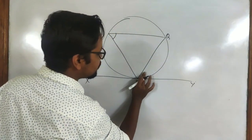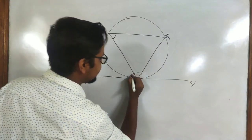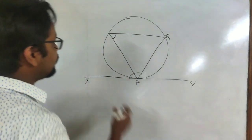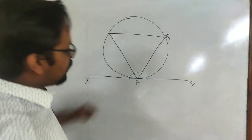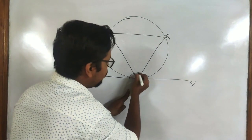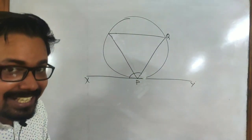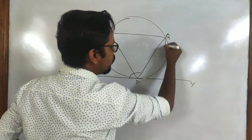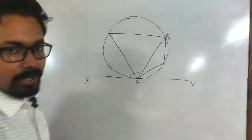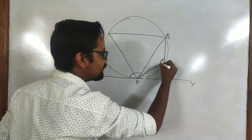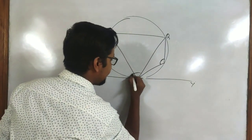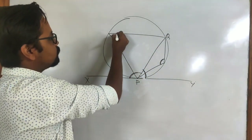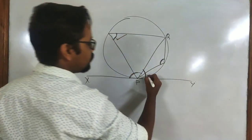Now consider the other angle. If PQ is the chord and we consider the bigger angle on the other side, the adjacent segment changes and so does the opposite segment. The chord needs to form an angle in that opposite segment, and this bigger angle with the tangent will be equal to the angle in that opposite segment.